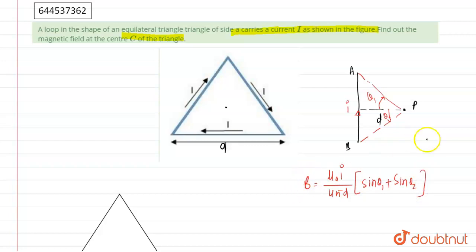That is the magnetic field at point P. The direction of the magnetic field is given by the right-hand palm rule: if the right-hand thumb points in the direction of current, the palm points in the direction of the magnetic field. In this condition, the magnetic field will be directed inside the plane.